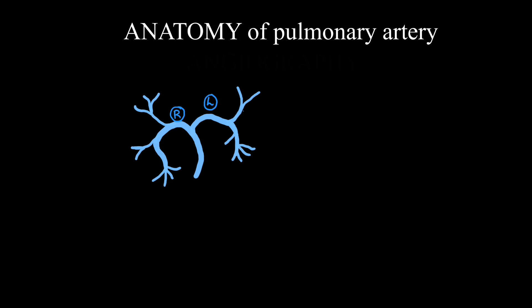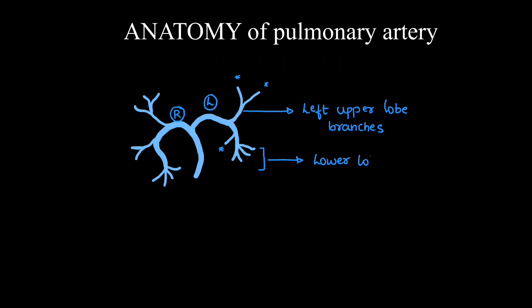The left main pulmonary artery has upper lobe branches for the anterior, apico-posterior, and lingular segments, as well as the lower lobe branches. Similarly, the right main pulmonary artery has branches for the upper lobe — anterior, posterior, and apical segments.